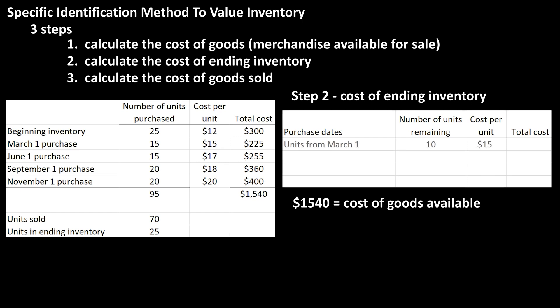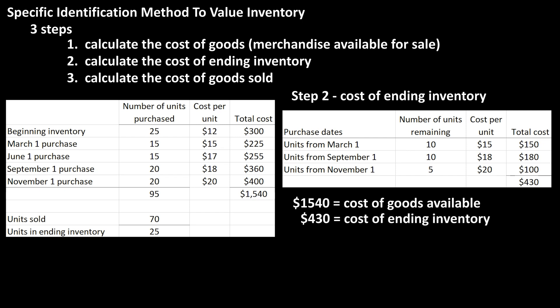They find that they have 10 units from the March 1st purchase at a cost of $15 per unit, 10 units from the September purchase at $18 per unit, and 5 units from the November purchase at $20 per unit. The total costs for these units from their purchase dates comes to $430, and this $430 is the cost of the ending inventory, which answers the second step.